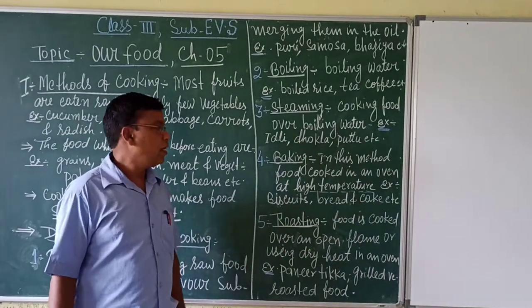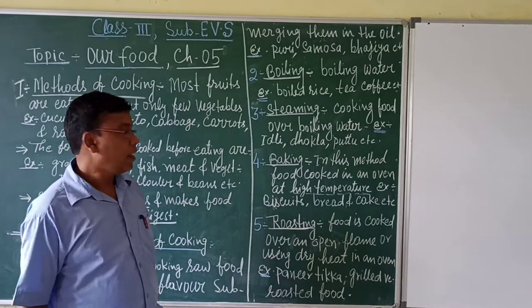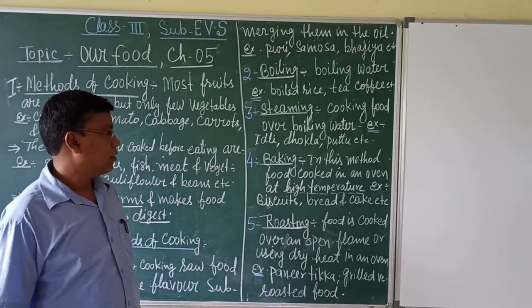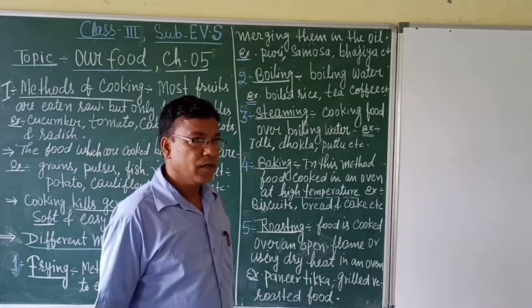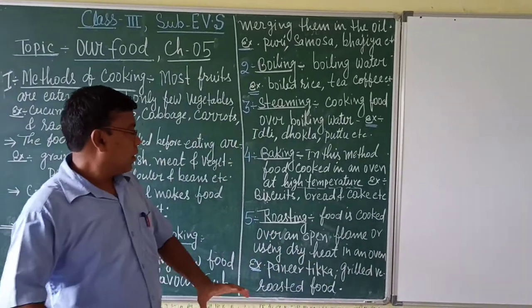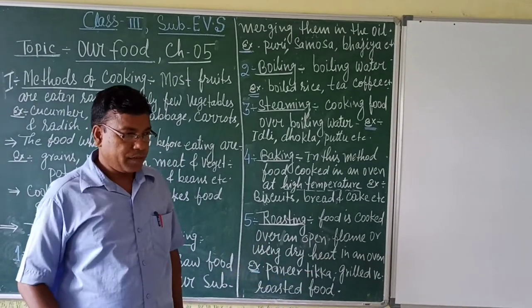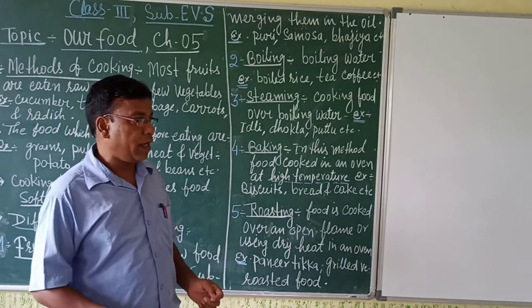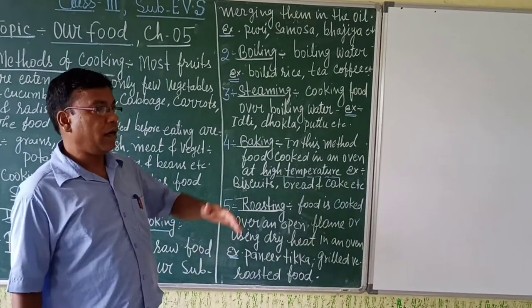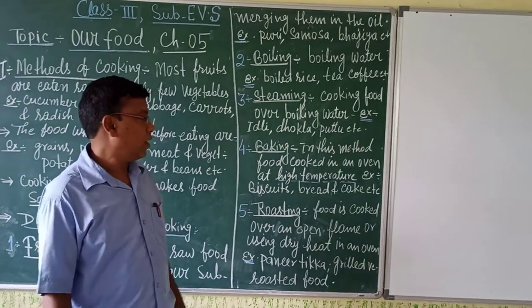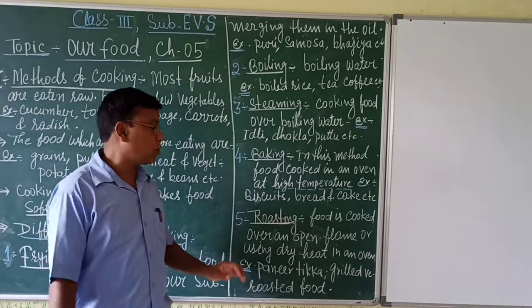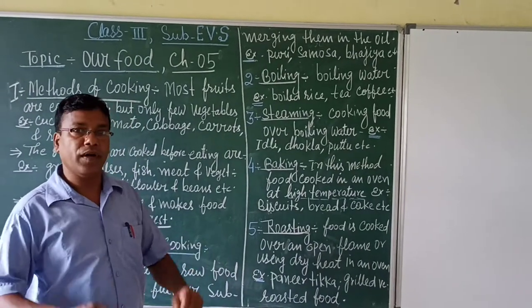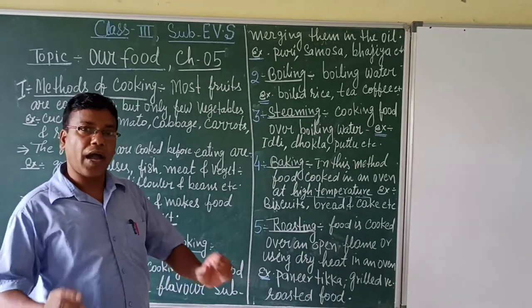The fourth method is baking. In this method, food is cooked in an oven at a high temperature. Examples include biscuits, bread, and cakes. The oven is heated using charcoal or a fire source underneath, and the food is baked inside at a high temperature. These are foods we eat that are made by the baking method.